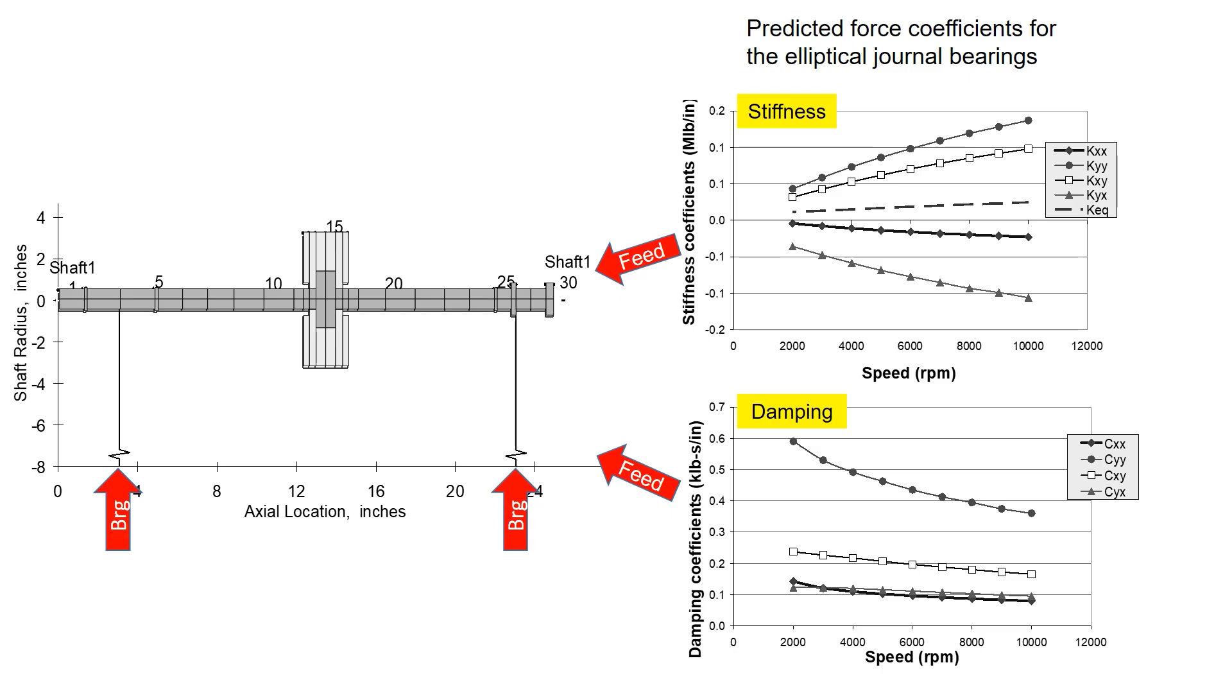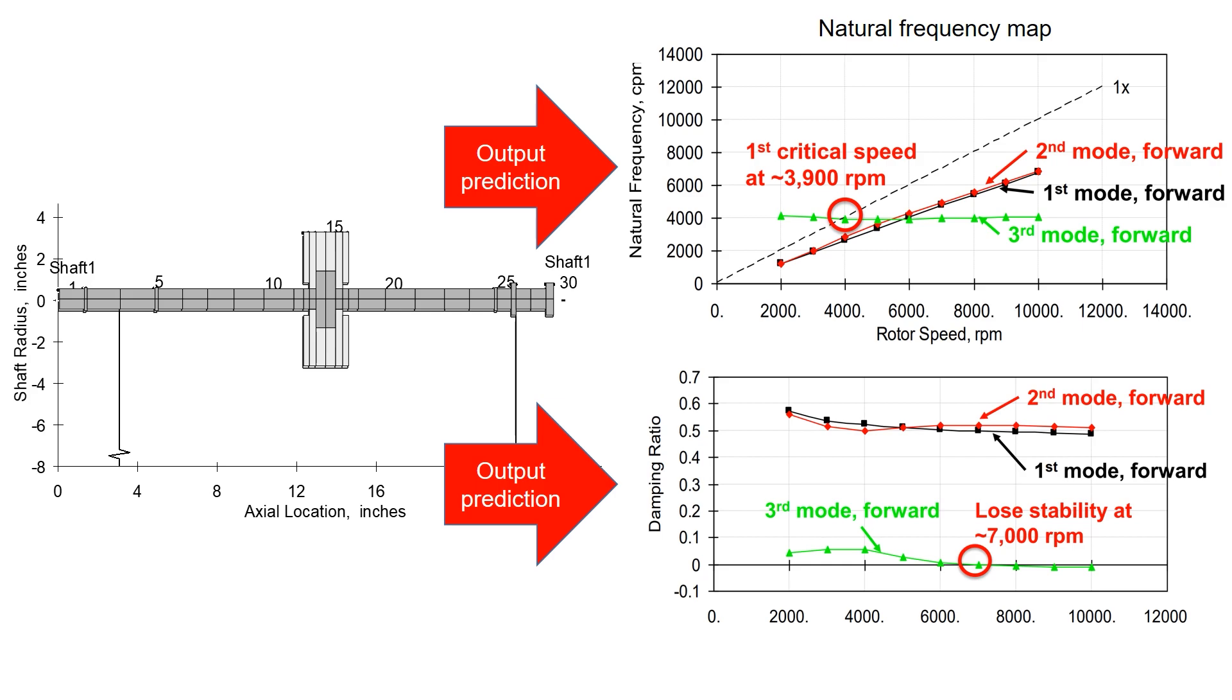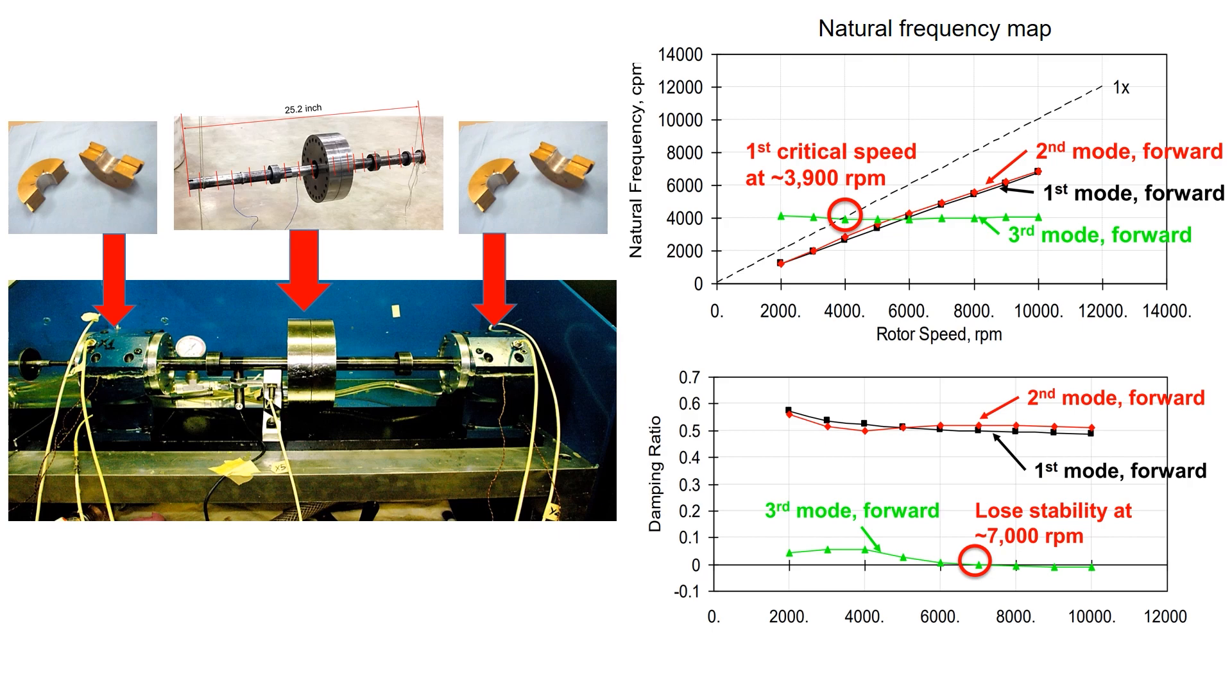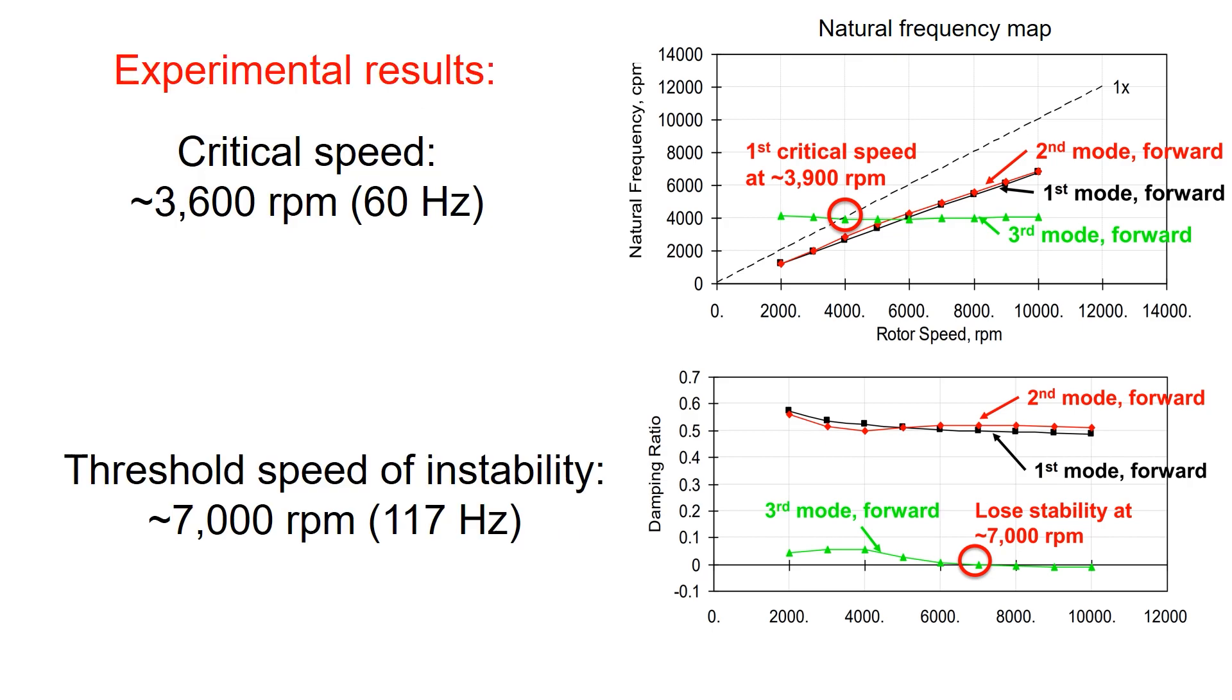Now you could predict the critical speed and the threshold speed of instability. Then you run coast up and coast down experiments and experimentally obtain where the critical speed is and when the instability occurs at what speed.